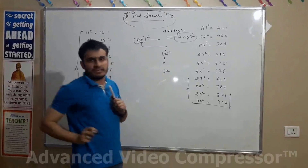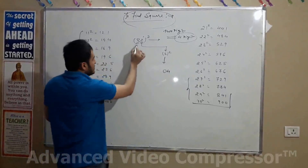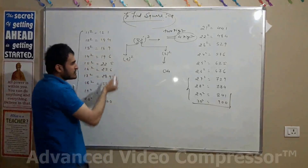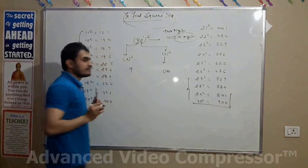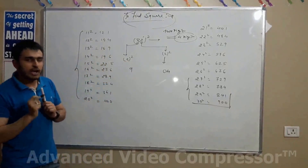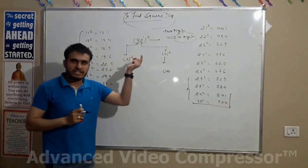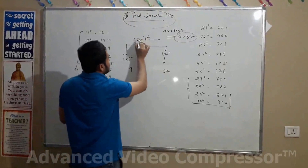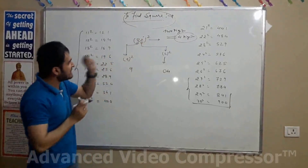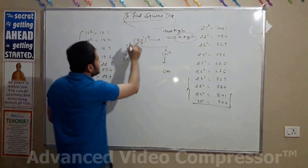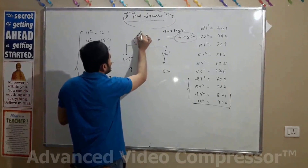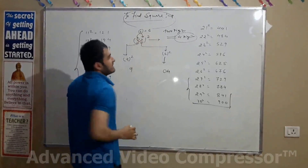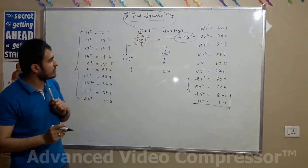For 32, the tens digit is 3. Square of 3 is equal to 9 — that is the first step. The second step: the unit number is 2 and the tens number is 3. You have to multiply both numbers, that is 3 × 2 equals 6.